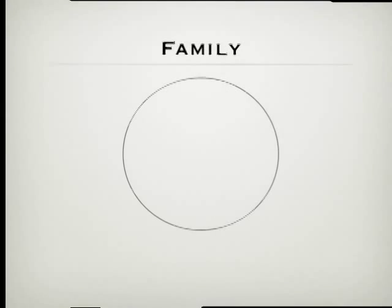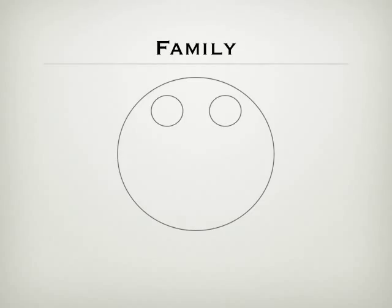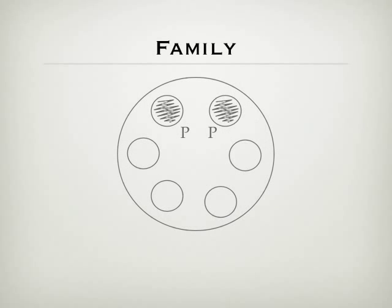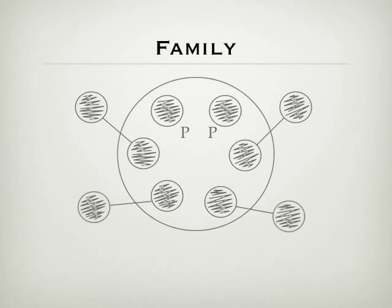Now let's take another look at a kind of organic structure. I want to use the illustration of a biological family. In a biological family, you have typically a couple of parents, and hopefully those parents are fairly mature. Additionally, the family will have children, and those children will be at different levels of maturity based on age primarily, but other factors as well. The role of the parent is to encourage, nurture, and equip — to bring those children to higher levels of maturity. The ultimate goal, of course, is for them to be able to go out and start families of their own.